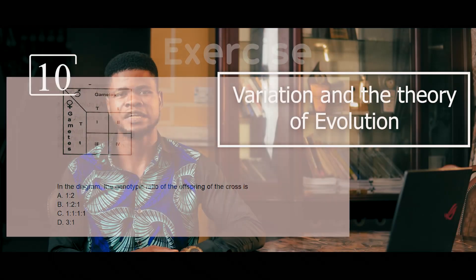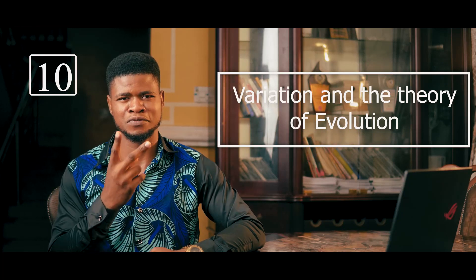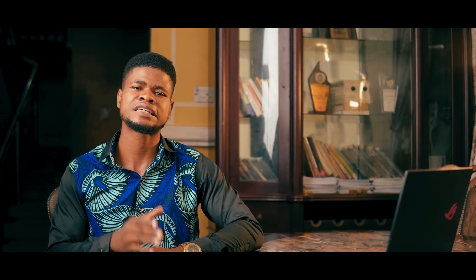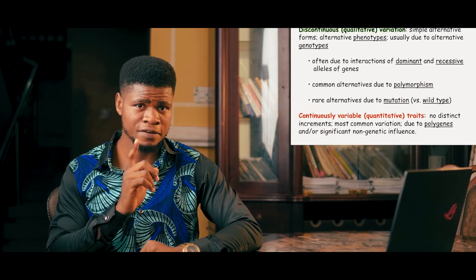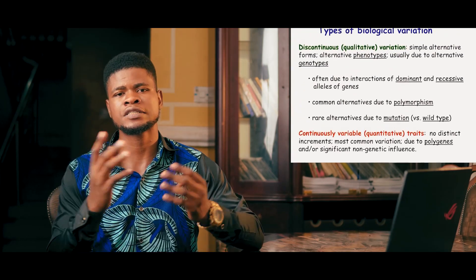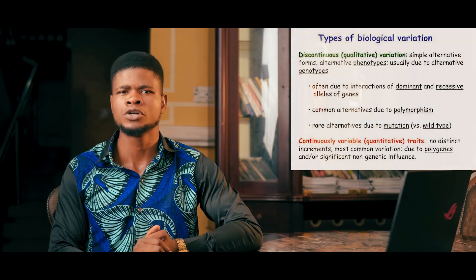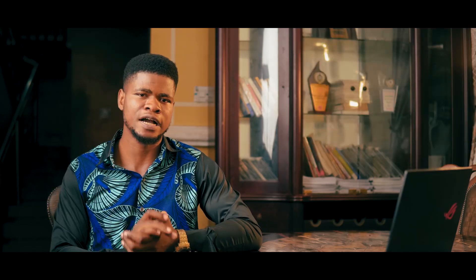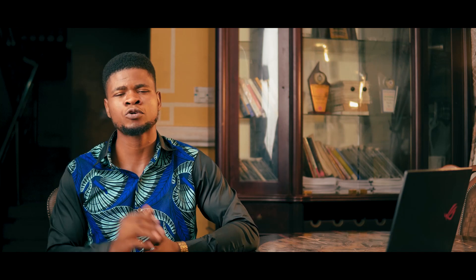The last is variation and the theory of evolution — two interesting topics combined. Under variation, you should know the types of variation, which is very, very important. You should know the concepts of evolution, know Darwin's and Lamarck's theory, and know the evidence that backs up the theory of evolution. Please pay important attention to this. If you have more time, please look into the nervous system and sense organs as a bonus point.